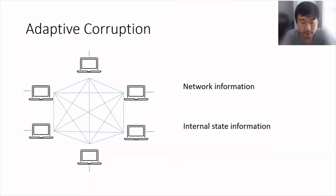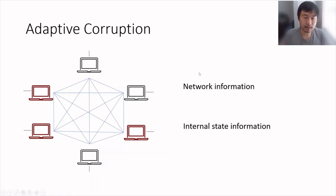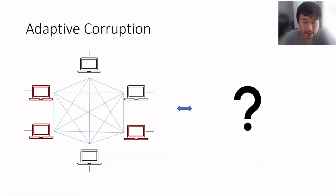In this work we consider the setting of adaptive corruption. This is a very challenging setting where the parties' computers can be hacked or corrupted during the execution of the protocol. Not only that, the corruption can be based on any information gathered so far — information the adversary obtained from the network, or information leaked from the internal state of a computer. The question is: what can we guarantee in this challenging setting? Intuitively, the security guarantees should depend on the set of parties that are corrupted — the more parties are corrupted, the less is guaranteed — and typically all guarantees are lost when the number of corruptions exceeds a certain bound.